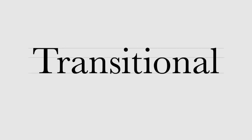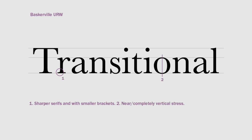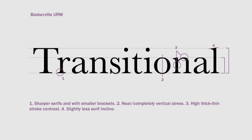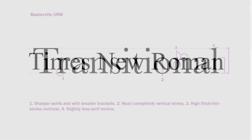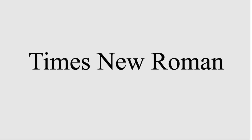Next we have Transitional. The printing process was more refined and allowed for elegant details to be included in a typeface. The serifs during this period were sharper with a smaller bracket, almost flat. Compared to Old Style, transitional typefaces have a nearly or completely vertical stress. The contrast between thick and thin strokes is even higher, and the serif incline on the ascenders was slightly flatter. This style maintained the tall X height. A very popular transitional font is Times New Roman.